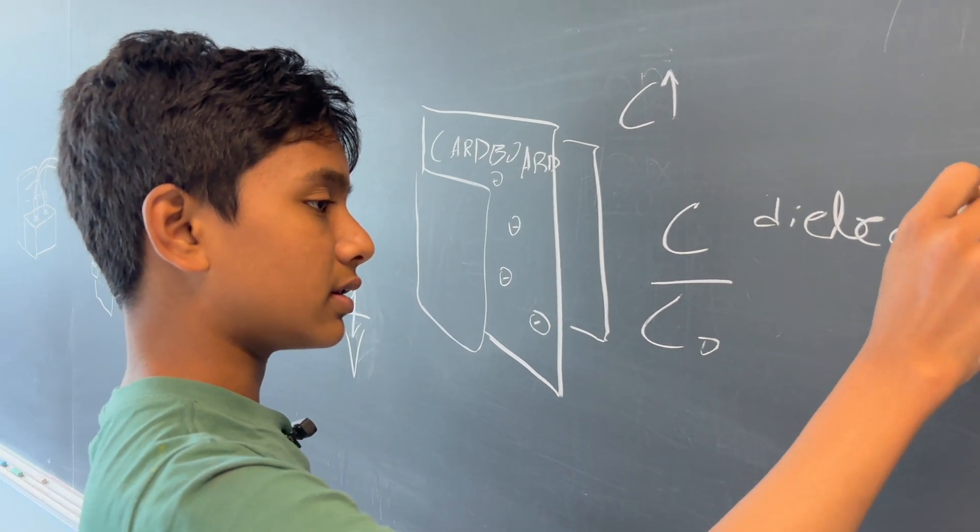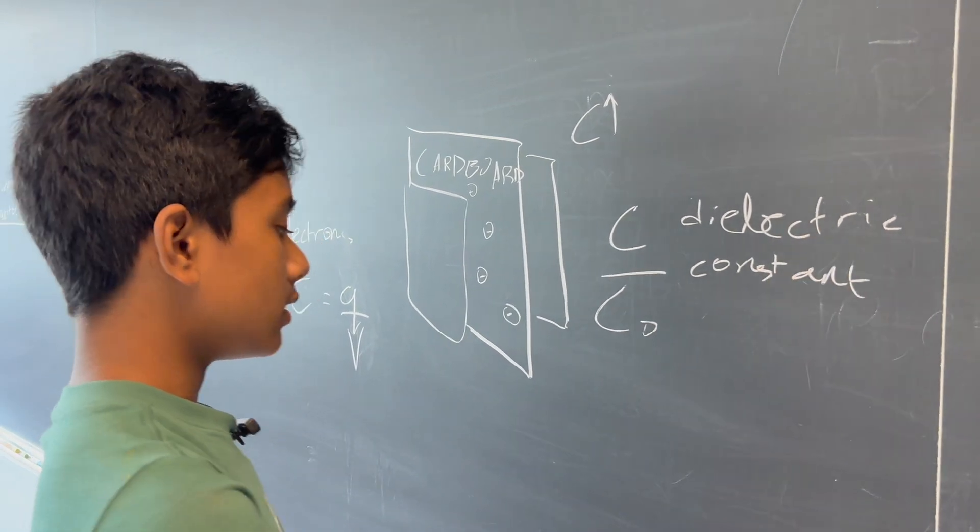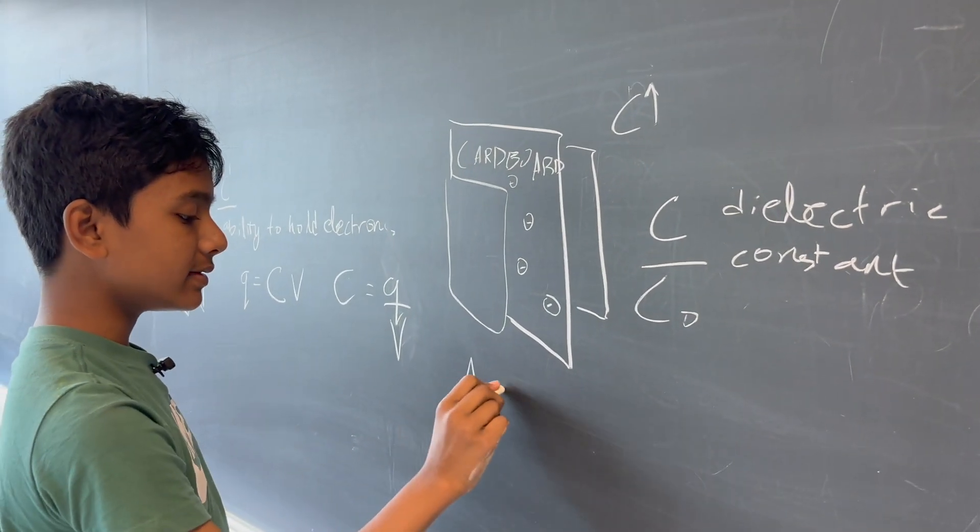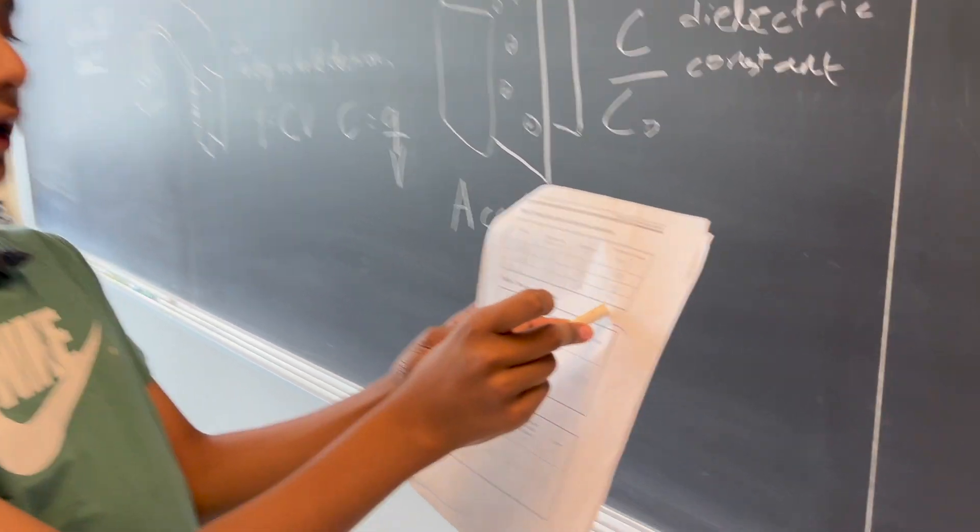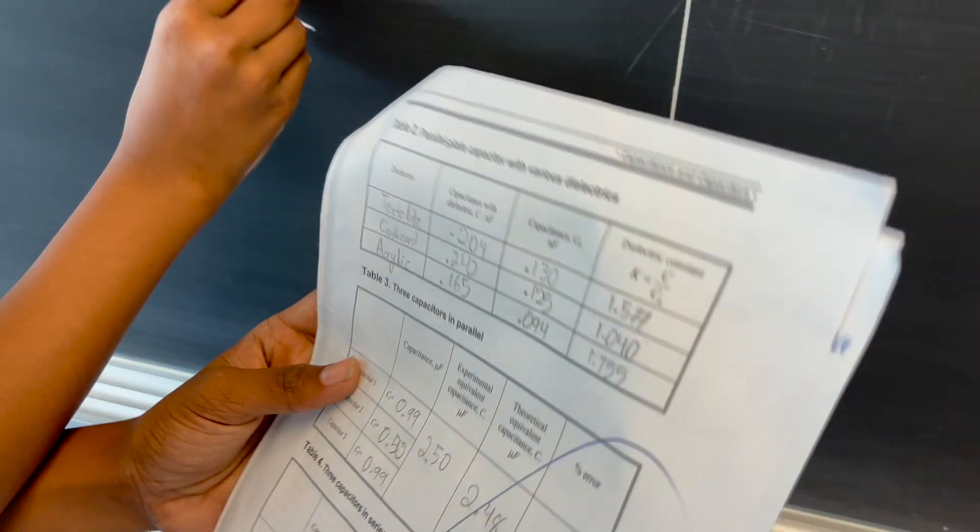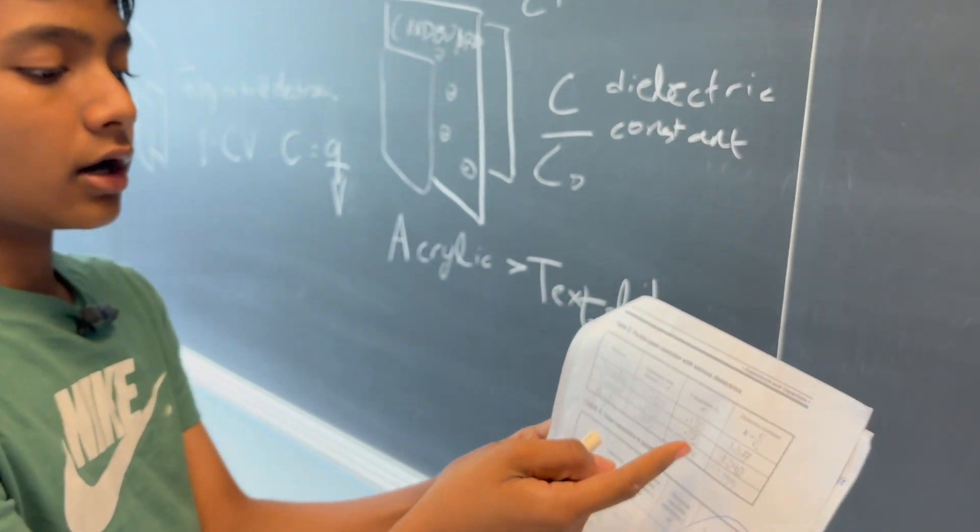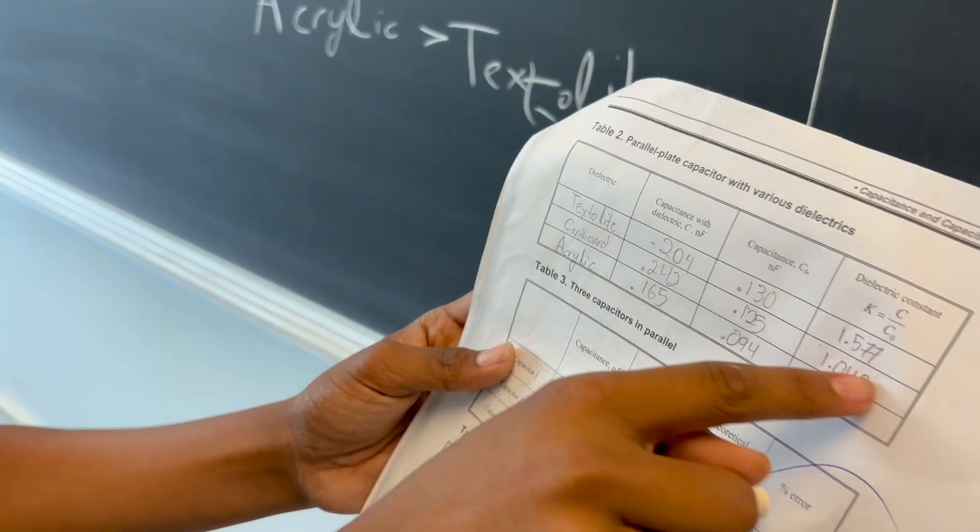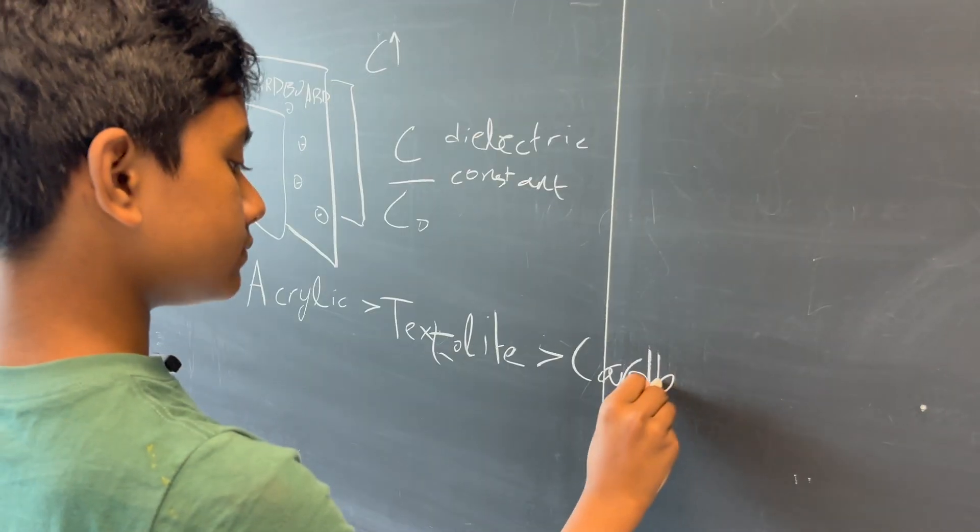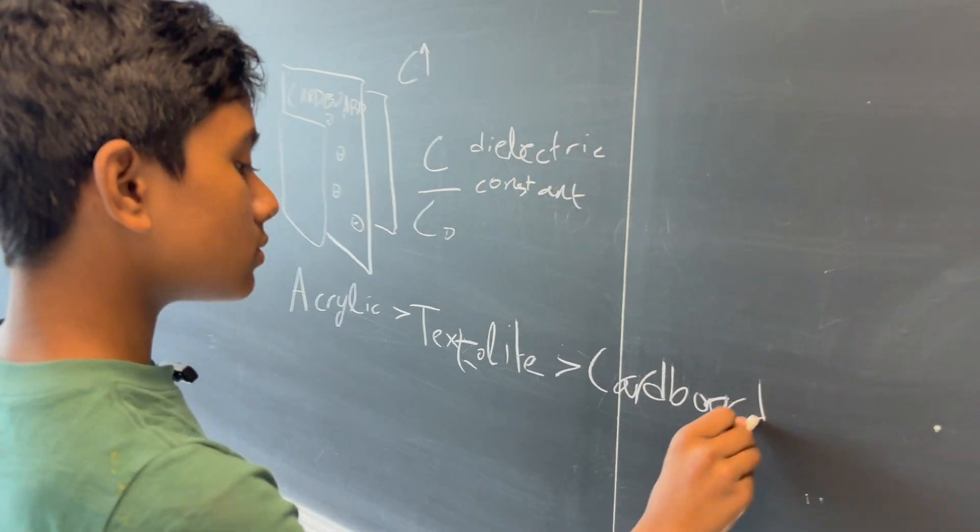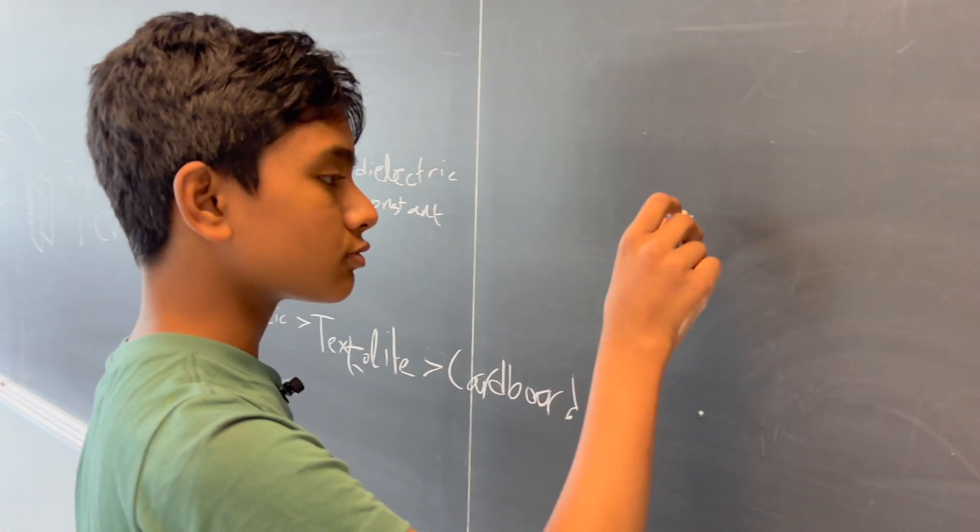And, of course, in our lab testing that we did today, turned out that acrylic over here had a much higher dielectric constant than textolite, which still had a much higher dielectric constant than cardboard. So, that's what capacitors do. Now, let's talk about capacitors role in circuits.